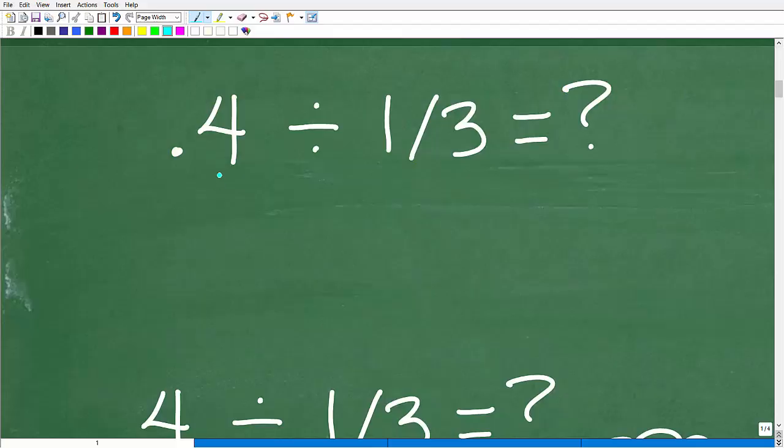Here's the problem. We have 0.4 divided by one-third. So I have a decimal here and I have a fraction. In my mind's eye, I'm a math guy. I could figure out what's the easiest way to do this. But you have to make a decision whether you're going to work in all decimals or all fractions.